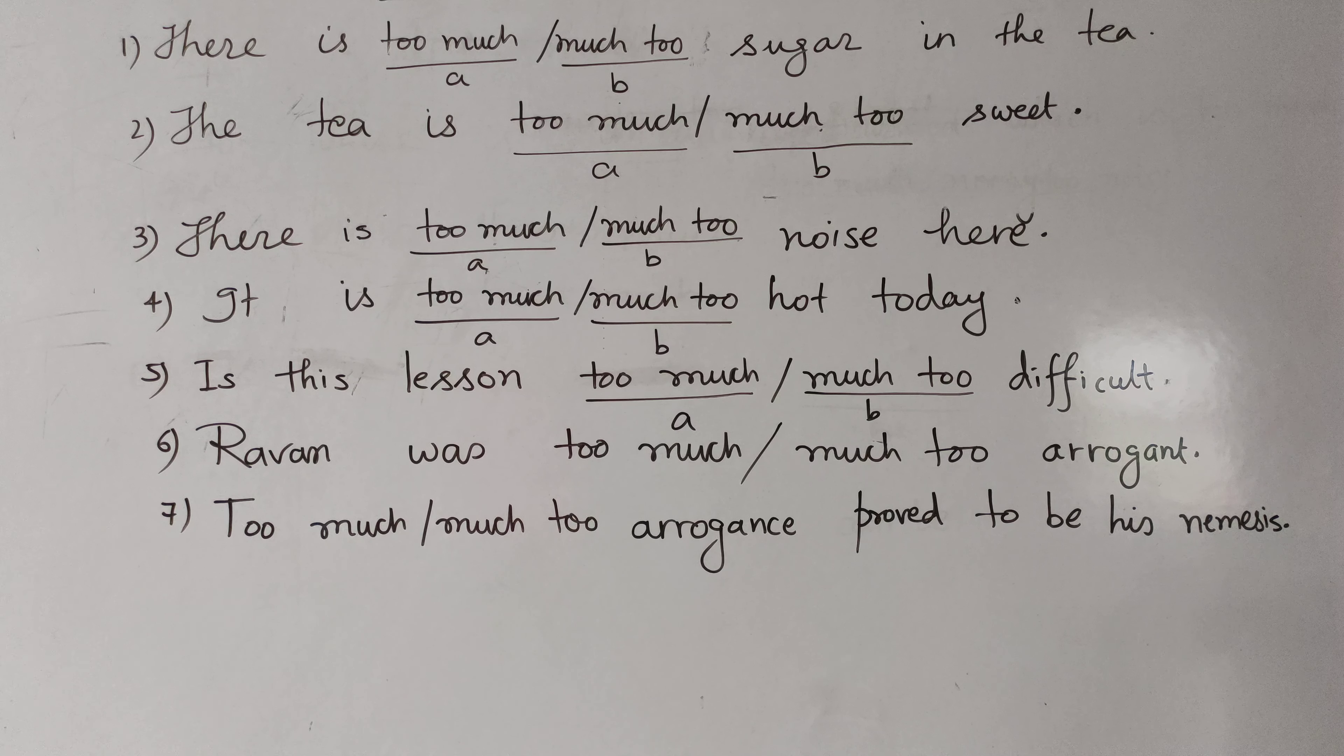all those question sentences where you have used much too. Much too sweet. Much too hot. Five. Much too difficult. Six. Much too arrogant. In these four examples you can observe. Sweet, hot, difficult, arrogant. These are all adjectives. So your answer is in front of you. When you have adjectives in front of you, before them you have to choose, write, say. What will you say? Much too.